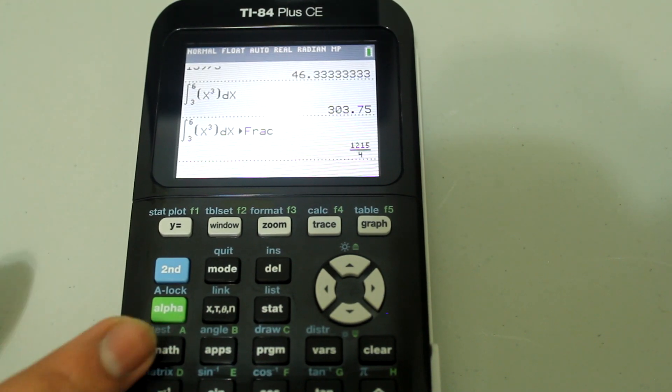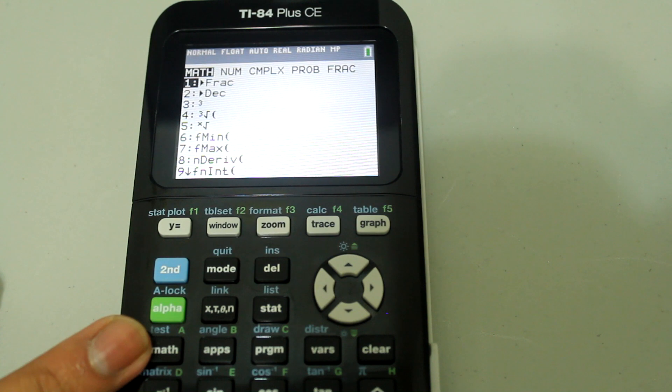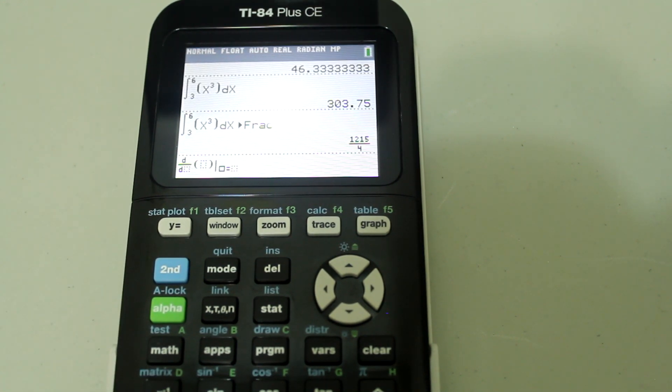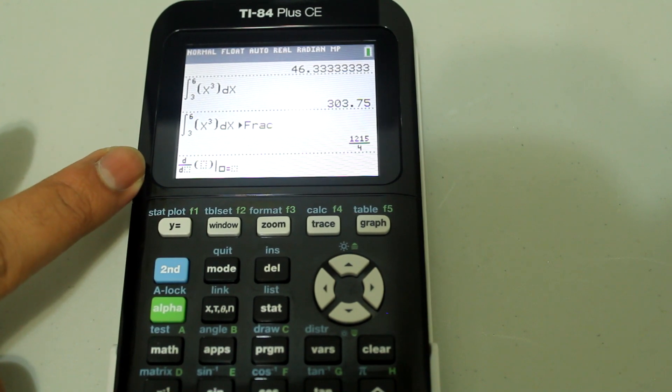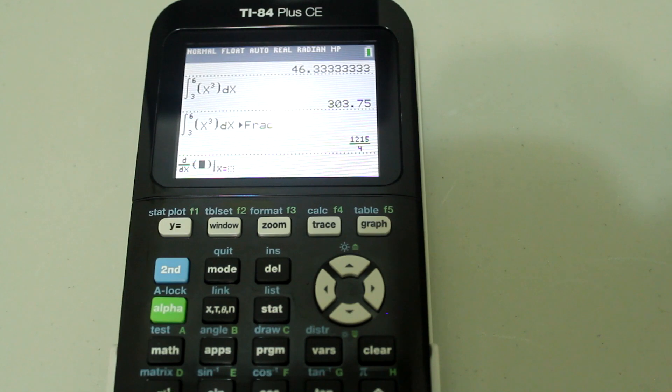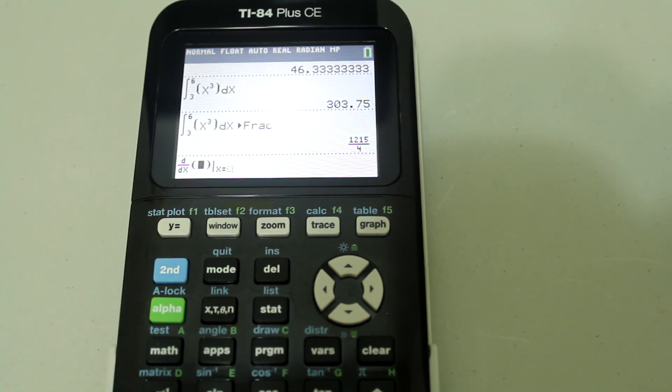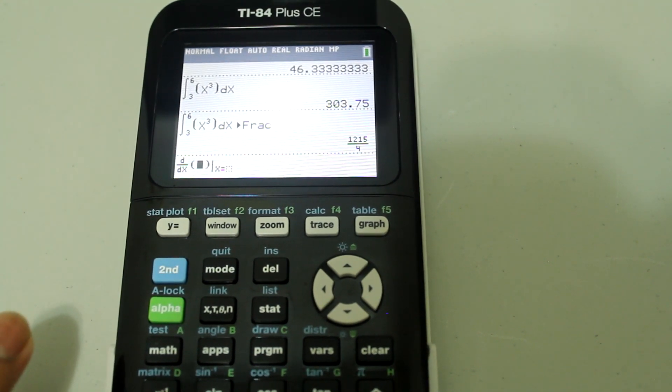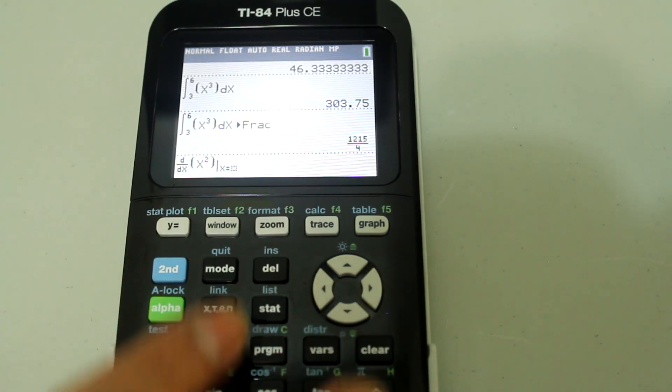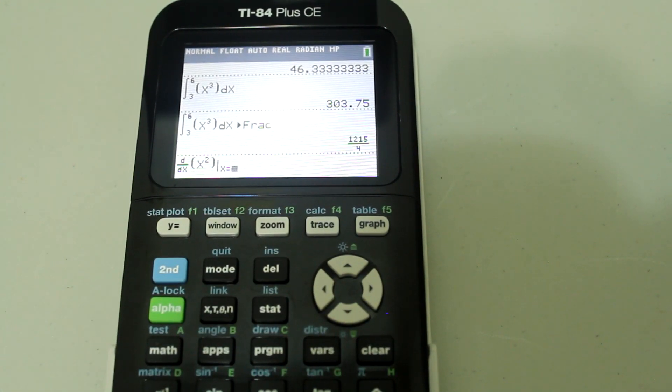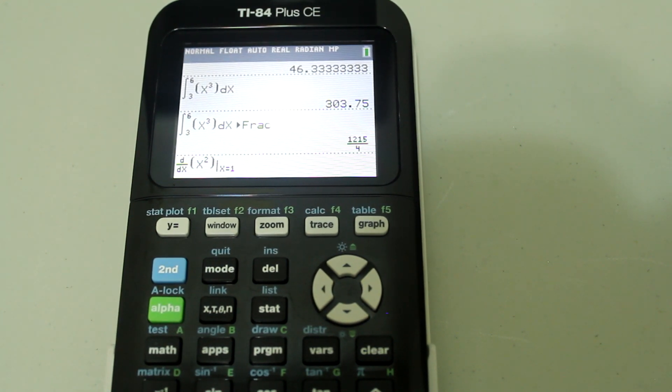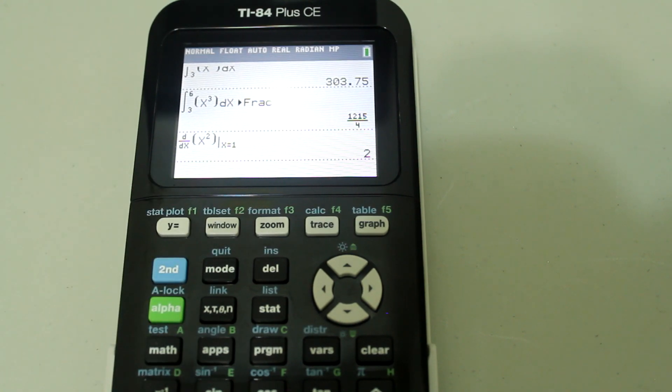Now if you wanted to differentiate, you go back to math, and you choose number 8, and you want to differentiate with respect to x, so you put d over dx, so you just hit the x and it automatically takes you to the parenthesis, and then let's just keep it simple, let's differentiate x squared, and let's say we want to differentiate at x equals 1, and we get the answer.